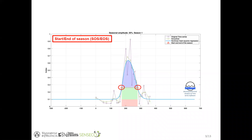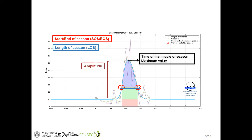Phenological metrics like start and end of the season approximate the timing of phenological events. Start of the season is also referred to as green-up, and end of the season as dormancy or senescence. Length of the season is obtained as the difference between start and end, associated with the complete temporal extension of plant development. Other indicators include amplitude, as the difference between the maximum and minimum base level values, and the area under the season curve.